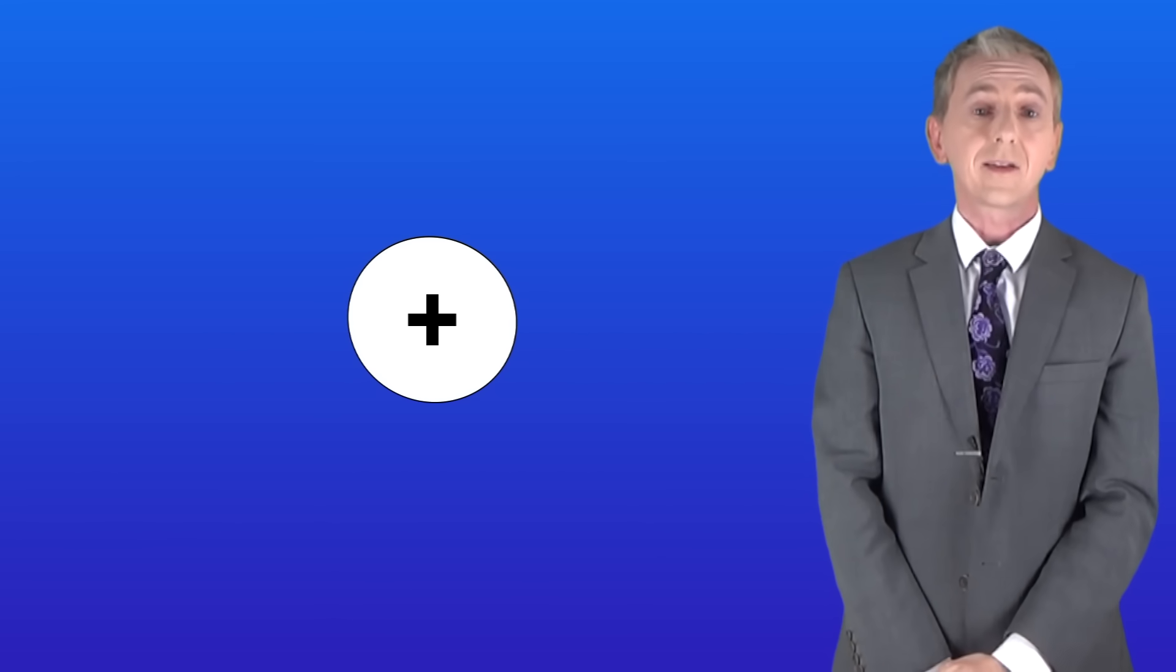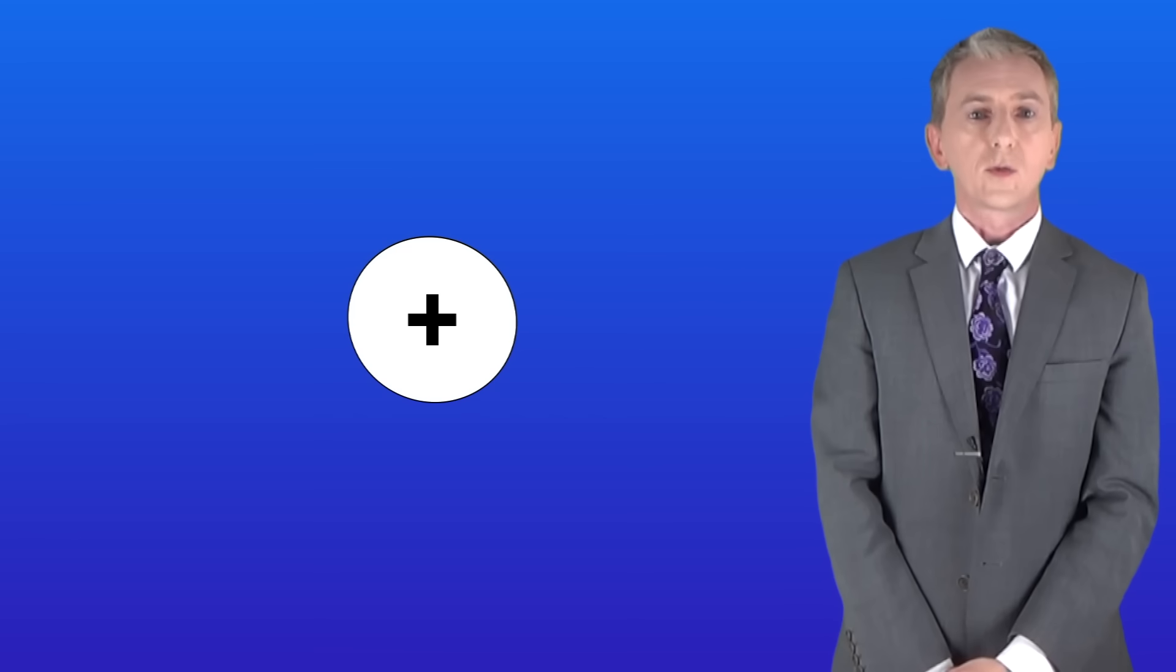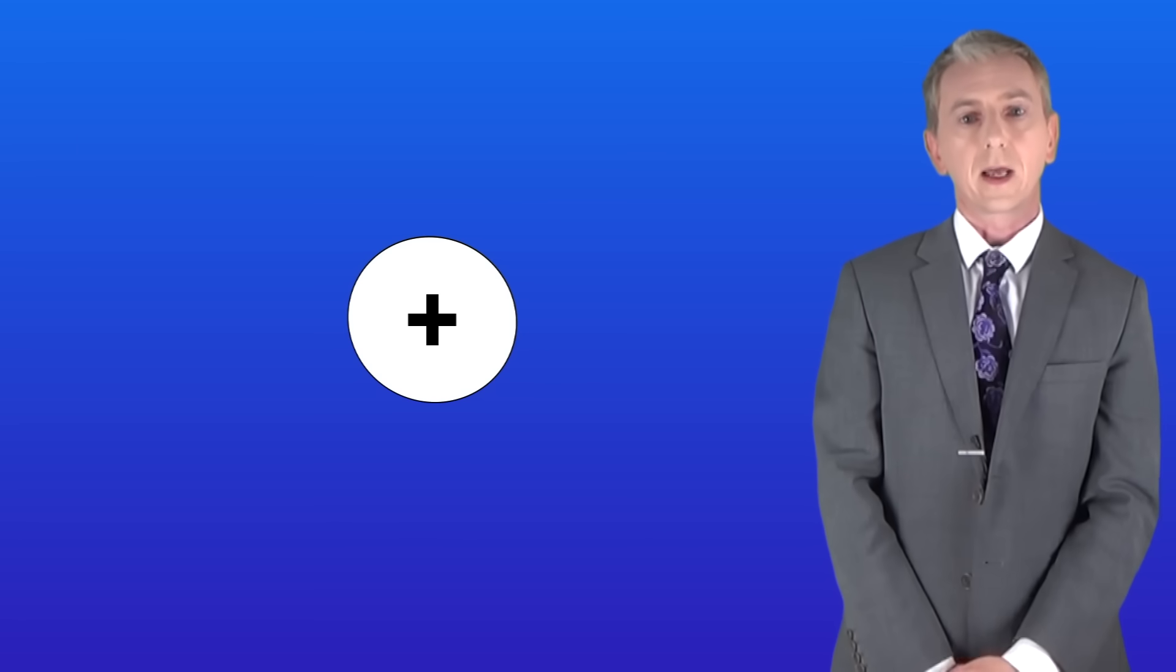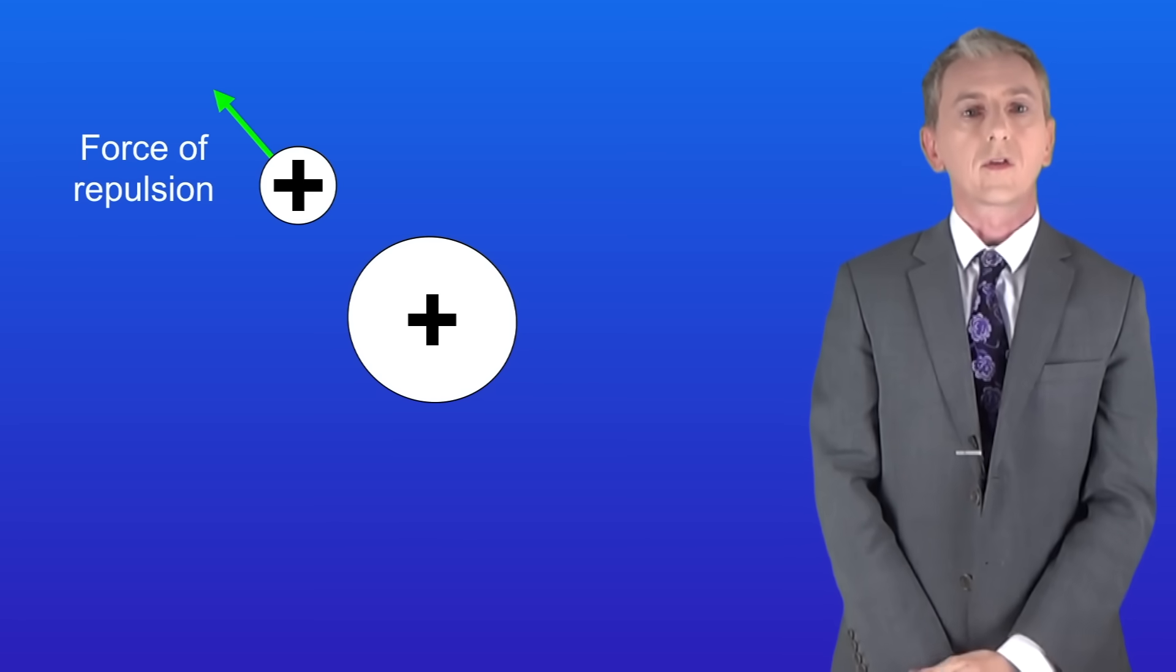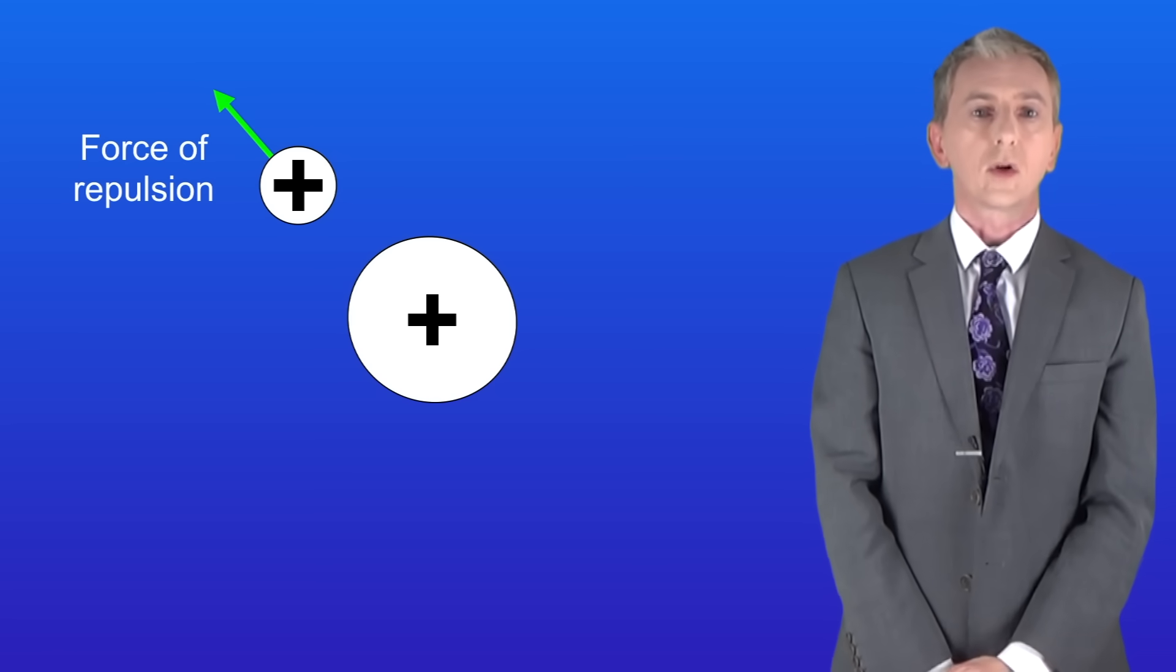I'm showing you here a charged object and it's completely isolated from any other object. Now this charged object has an electric field around it. What that means is that if we place another charged object near it, like this, it will experience a force. In this case, because both of the objects have the same type of charge, this will be a force of repulsion.